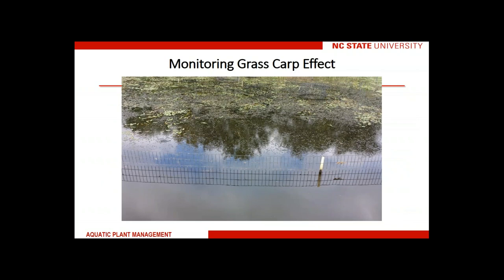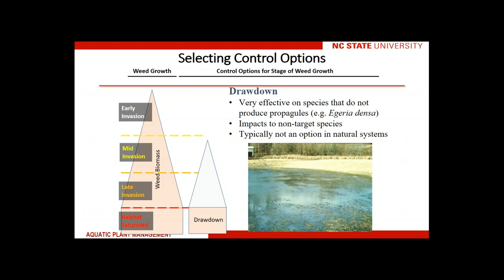One way you can monitor grass carp impact is with an exclosure or fencing. You have to treat grass carp somewhat like livestock — if you overstock them they're going to eat everything, and if you don't stock enough you may not know they're in the system. Within an exclosure, you see a lot of hydrilla and pondweed with leaves at the surface. Outside the exclosure where grass carp are free to roam, you see no submerged vegetation at all, telling you that grass carp are having a big impact. Drawdowns can be effective on species that do not produce propagules like Egeria densa, though this is typically not an option in natural systems where you may not have the ability to draw the water down.